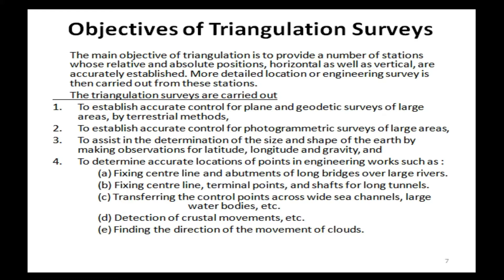Objectives of triangulation surveys: the main objective is to provide a number of stations whose relative and absolute positions, both horizontal and vertical, are accurately established. More detailed location or engineering surveys are then carried out from these stations. Triangulation surveys are carried out: (1) to establish accurate control for plane and geodetic surveys of large areas by terrestrial methods; (2) to establish accurate control for photogrammetric surveys of large areas; (3) to assist in the determination of the size and shape of the earth by making observations for latitude.